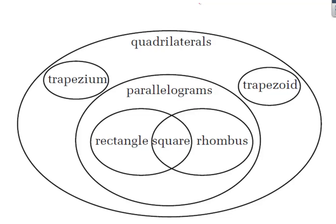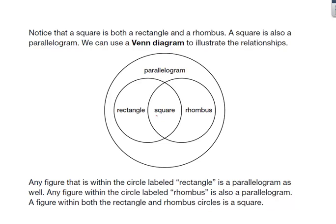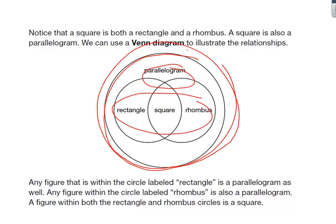This diagram helps you see how everything fits together. Starting with quadrilaterals, we have trapeziums, trapezoids, and rhombuses. Notice your rectangle and square fit together. A square can be a rhombus and also a rectangle — a square is both a rectangle and a rhombus, and also a parallelogram. A rectangle is a parallelogram. A rhombus is a parallelogram. All three fit inside the parallelogram circle.